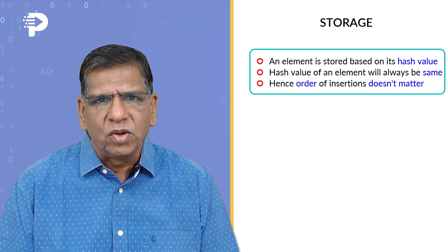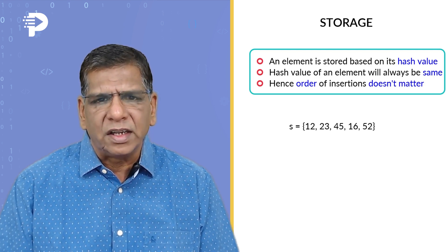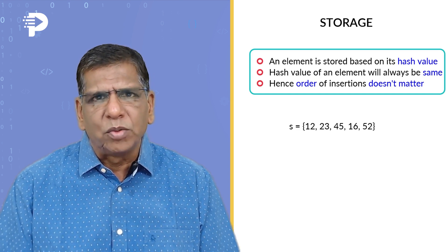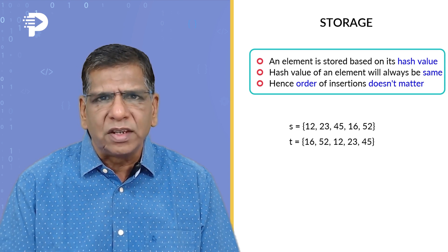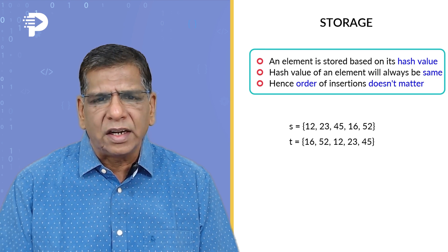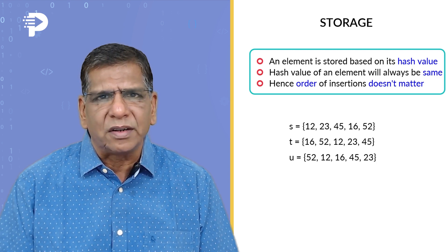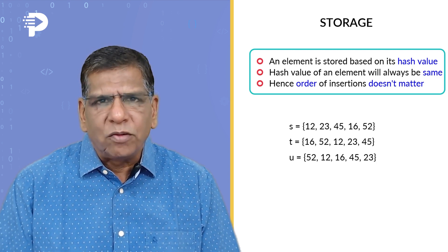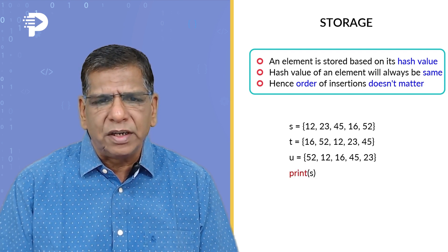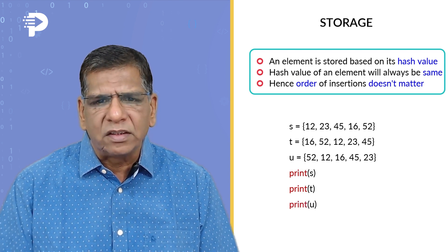To demonstrate this to you, let me create three sets. Here is the first one containing 12, 23, 45, 16, and 52. Then I create one more set in which I use the same elements but I change the order of insertion. And then I create yet another where once again the elements remain same but the order of insertion is different. And what we find is that when we try to print them out saying print s, print t, and print u, the order of access turns to be exactly same.